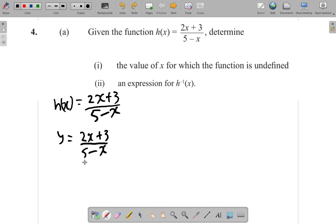Then interchange x and y. Change y to x and x to y. So instead of y equal, we have x equal. And 2x, instead of 2x, we have 2y. Change x to y. It's plus 3 over 5 minus, change x to y.